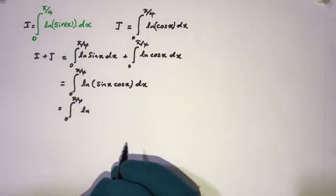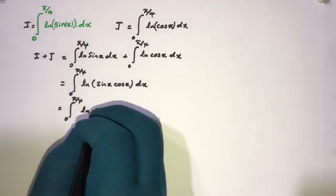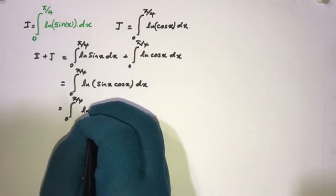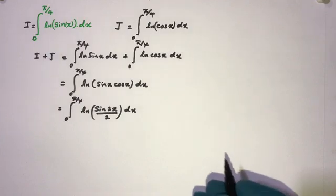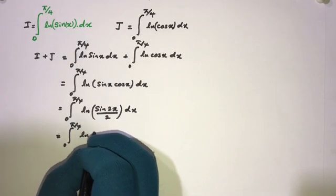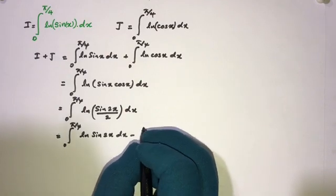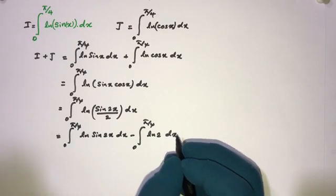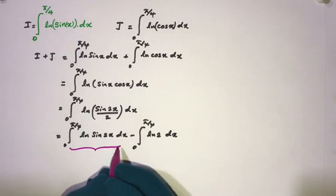So I plus J equals the integral from 0 to π/4 of ln(sin x · cos x) dx. We know the double angle formula: sin(2x) = 2·sin(x)·cos(x), so sin(x)·cos(x) = sin(2x)/2. Applying the log property again, we get the integral of ln(sin 2x) minus ln(2) dx.